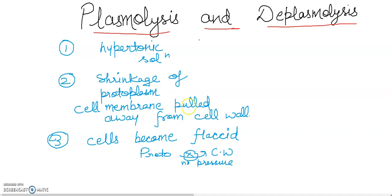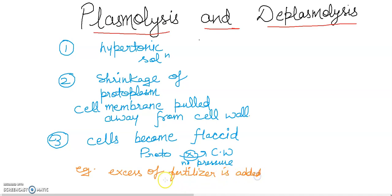You can add one example for this: when we add excess fertilizer to soil, the soil becomes hypertonic, and the plant cells will be plasmolyzed. So excess fertilizer added to soil creates a hypertonic condition which leads to plasmolysis.